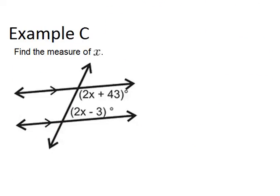Let's go to the last example. Example C. Find the measure of X. Well, just like the last problem, these two angles are same side interior angles because they're both on the right side of the transversal and inside the lines.